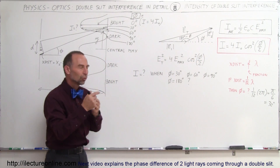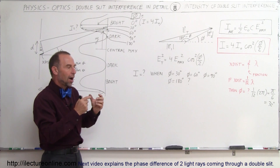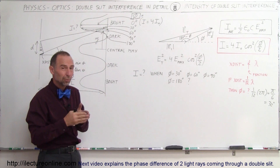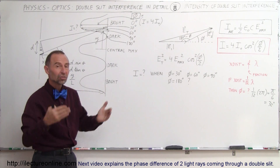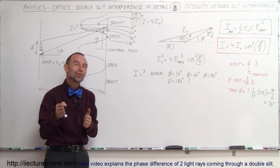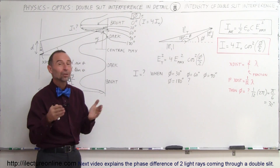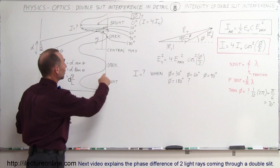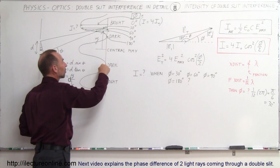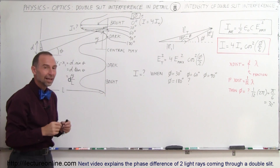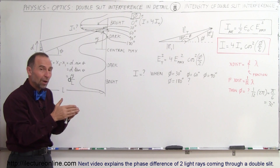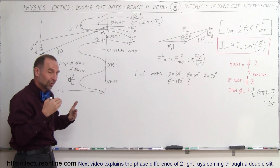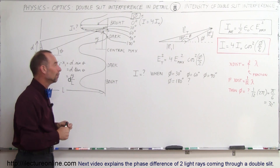Phi is the phase difference in terms of degrees or radians — how much of a phase difference there is from one wave to the other when they come together. It can range from zero degrees to 360 degrees. Zero degrees and 360 degrees are in phase. At 180 degrees they are completely out of phase, so you see no light at all — that's where the dark spots appear on the screen.